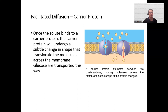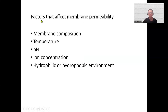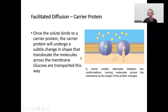The channel protein is stationary — like an open door, particles just go in and out. The carrier protein is like a revolving door — the molecule has to bind to the protein, it turns, and then it gets out on the other side. Glucose uses this method to pass through. That's facilitated diffusion.